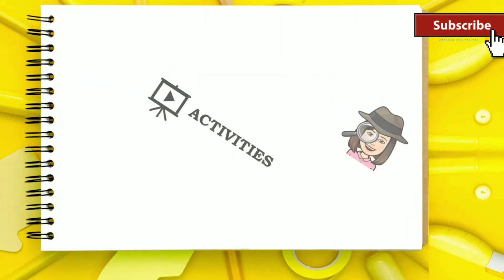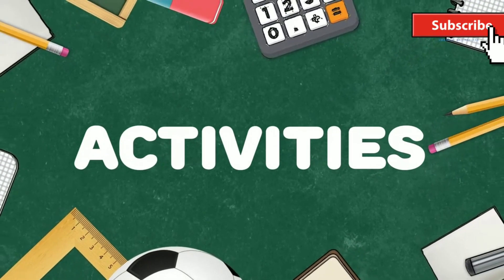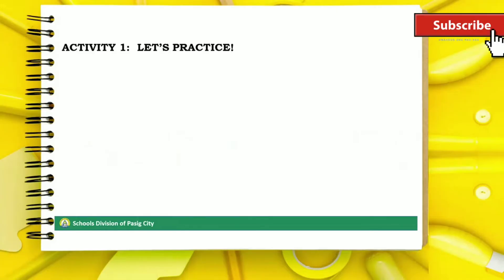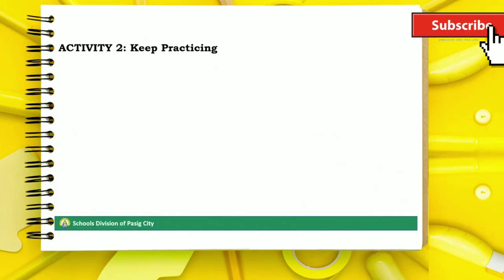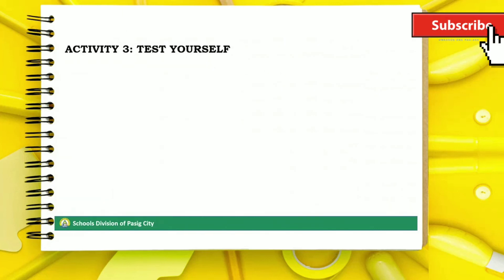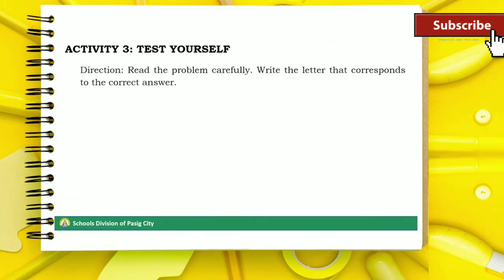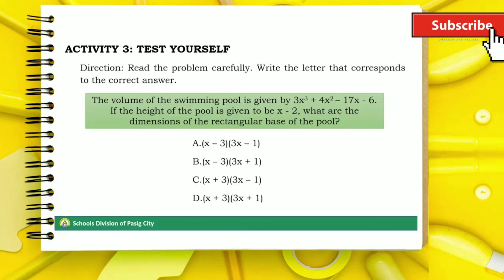Now let us try to answer the following activities. Activity 1 — Let's practice: Find the roots of the following polynomial equations. Activity 2 — Keep practicing: Find a polynomial equation with integral coefficients that has the given numbers as roots. For our last activity, read the problem carefully and write the letter that corresponds to the correct answer.